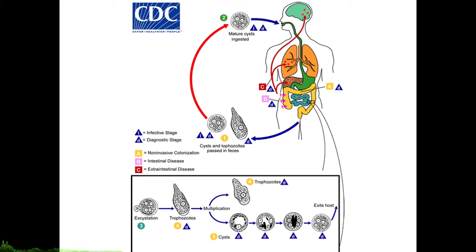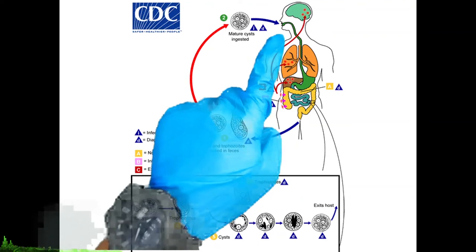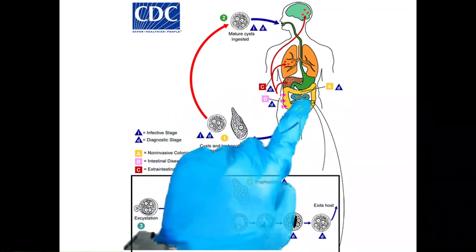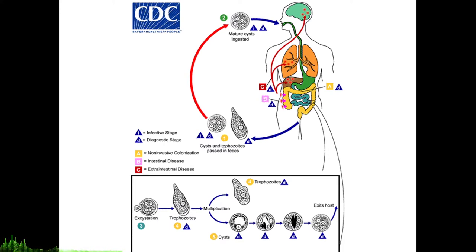Upon ingestion of the cyst, excystation then occurs in the terminal ileum or the colon, resulting in trophozoites, which is the invasive form. Trophozoites can penetrate and invade the colonic mucosal barrier, leading to tissue destruction, secretory bloody diarrhea, and colitis resembling inflammatory bowel disease.